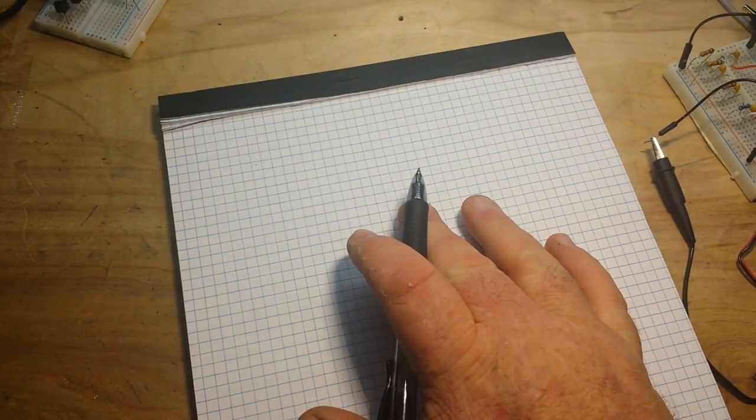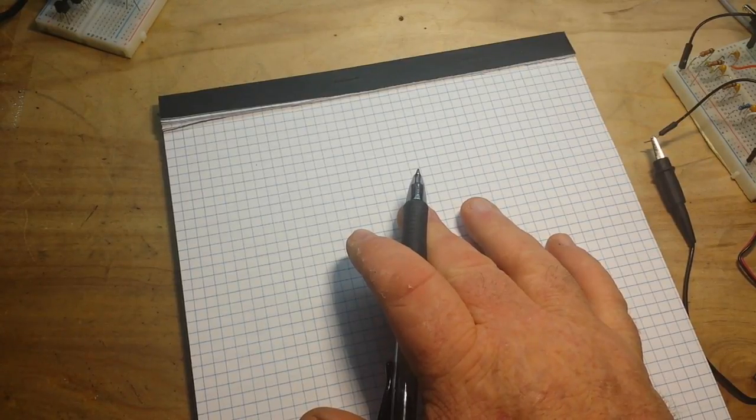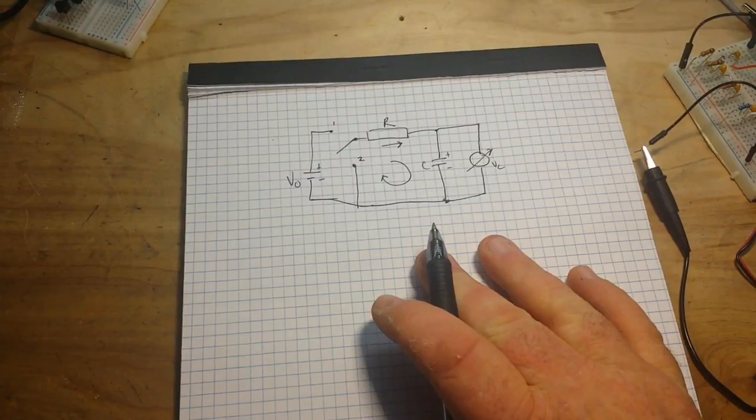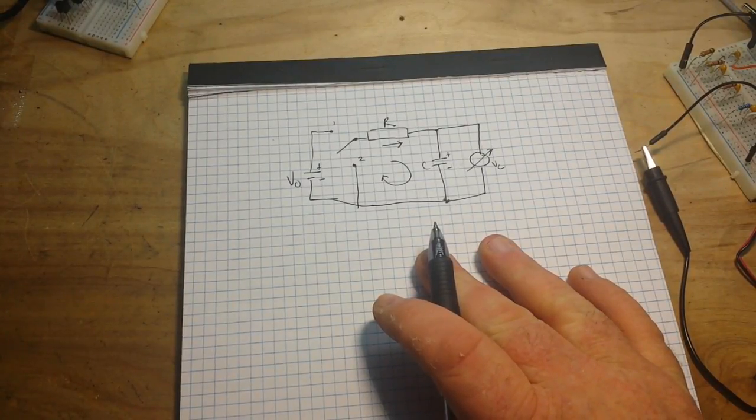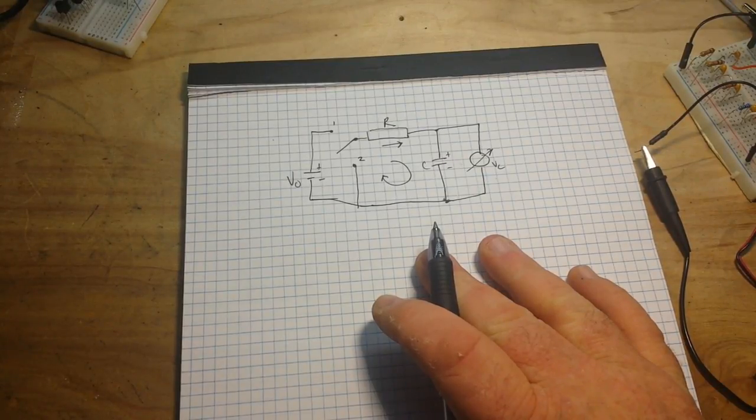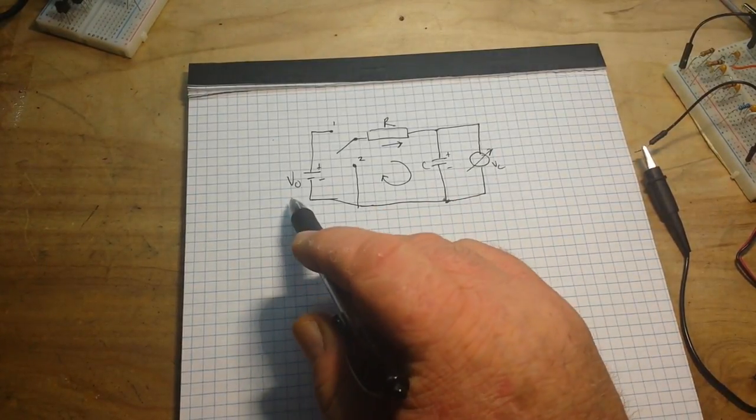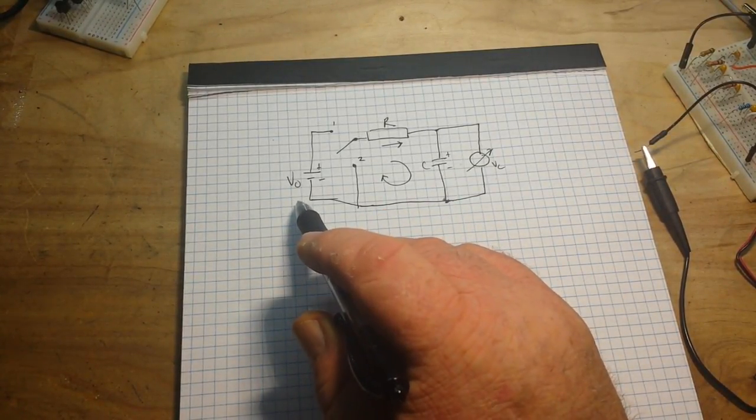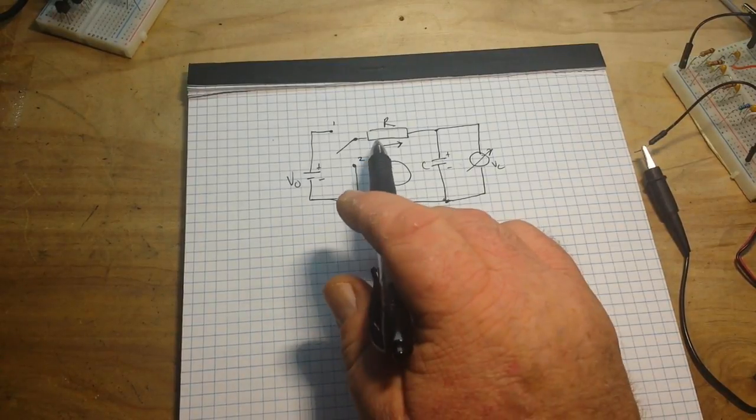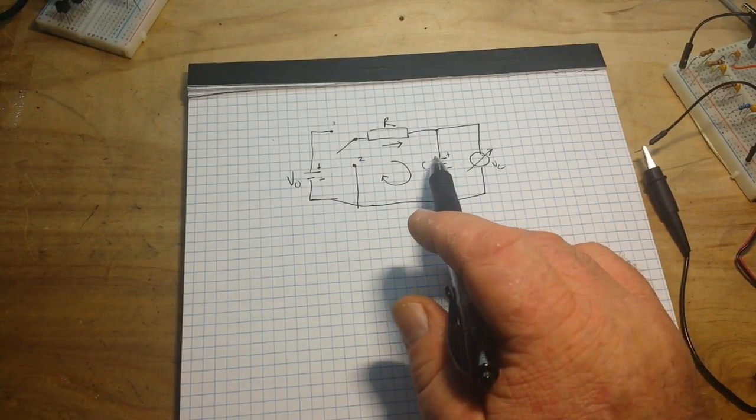So first of all, let me draw a little circuit here. I drew it with the camera off to save some time so that we can get right to the discussion. So let's say a power supply is providing DC voltage V0 is connected in series to a resistor R and a capacitor C.